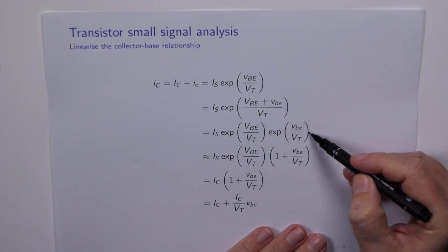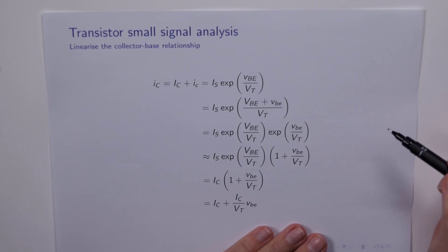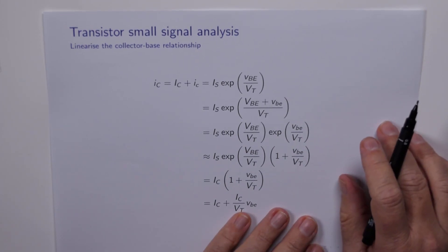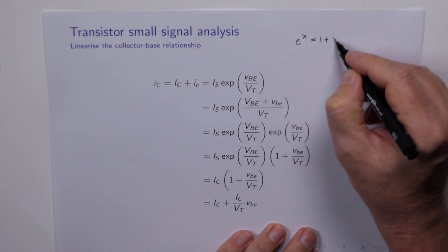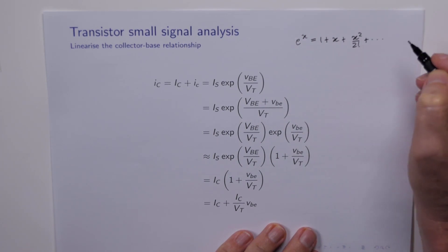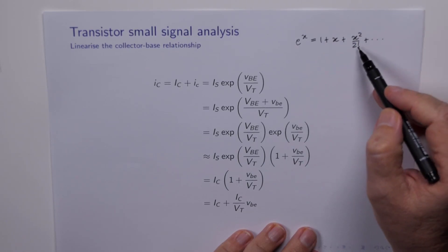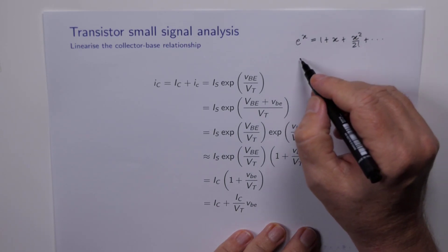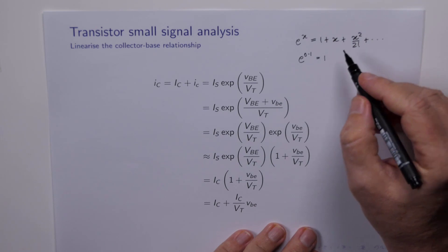The crucial step is from here to here, where we've replaced e to the VBE over VT with 1 plus VBE over VT. Now all we've done is make use of Taylor's expansion for e to the power of X, which is 1 plus X plus X squared over 2 factorial and so on. If X is small, then these higher order terms get smaller still.